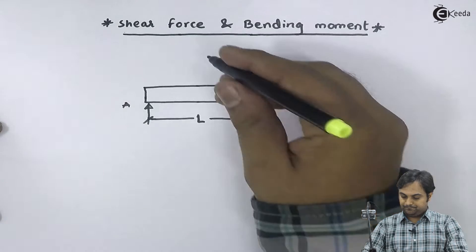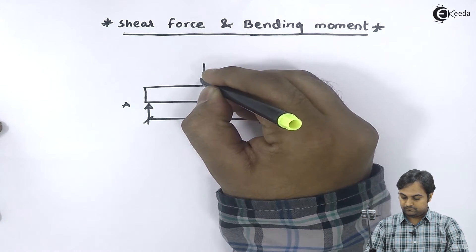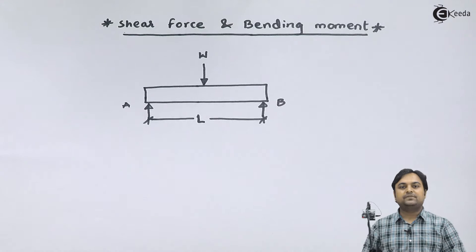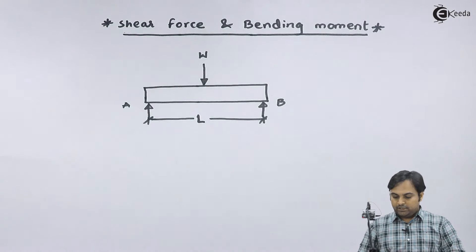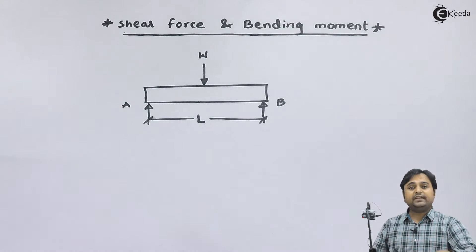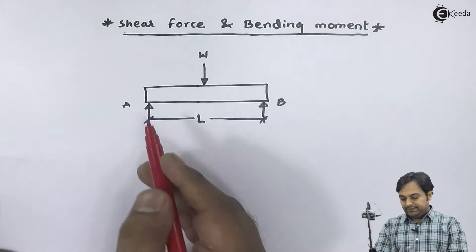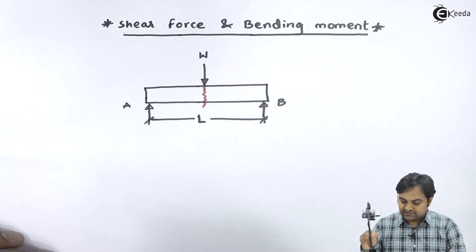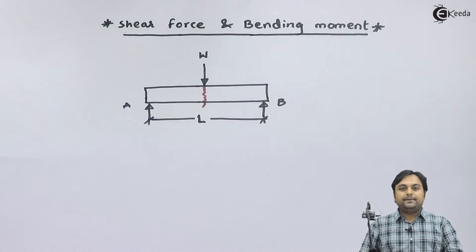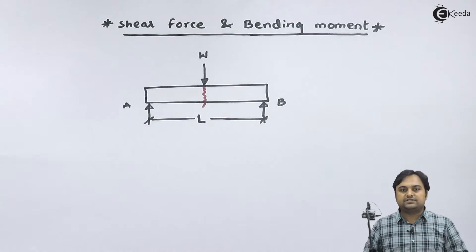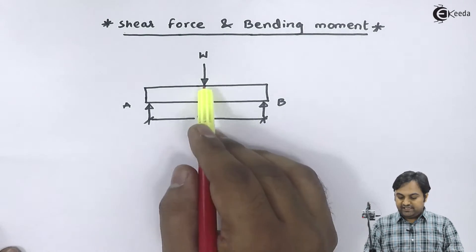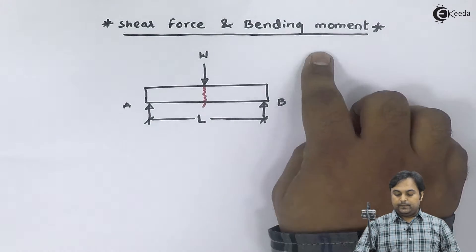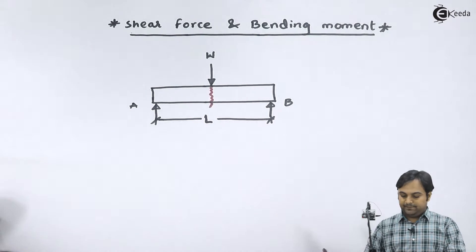Now when we load this beam — suppose we have a load W acting on it — there can be more than one load acting on the beam. Because of this load acting in the downward direction, and the beam being supported at its two ends, there are chances of the beam breaking into two parts. This breaking of the beam is called shearing of the beam, and the force responsible for it is called the Shear Force.